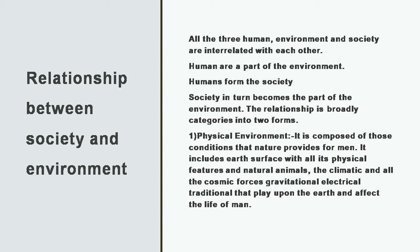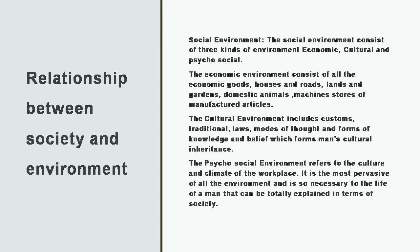They have a bonding and dependency with each other. Society in turn becomes part of environment. The relationship has some categories. First, we will see the physical environment. It is composed of those conditions that nature provides for men. It includes earth's surface with all its physical features, natural climatic and cosmetic forces. Now, social environment consists of three kinds: economic, cultural, and psychosocial.